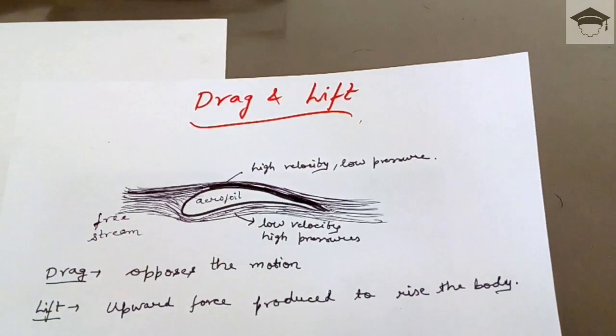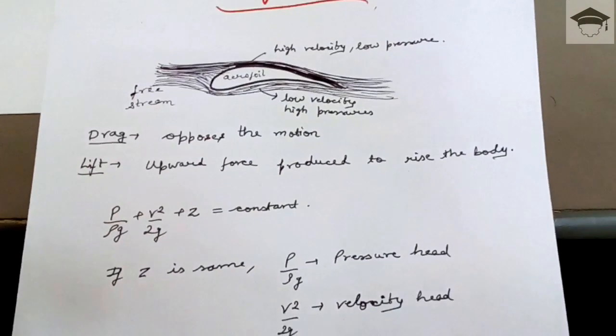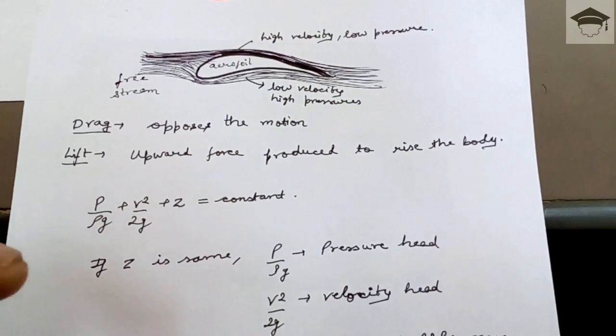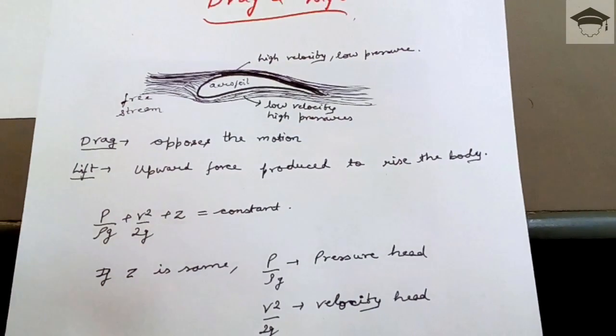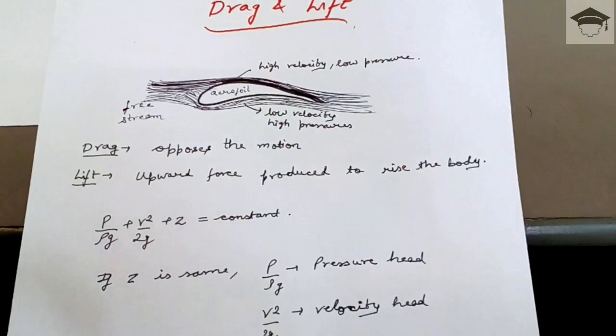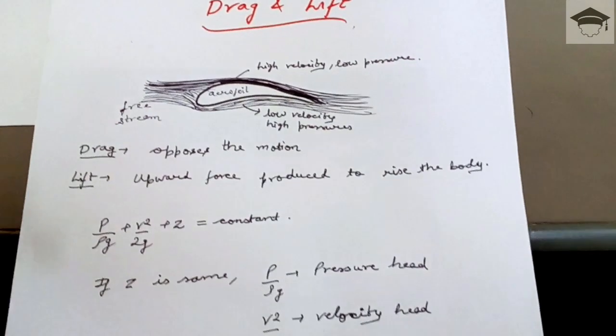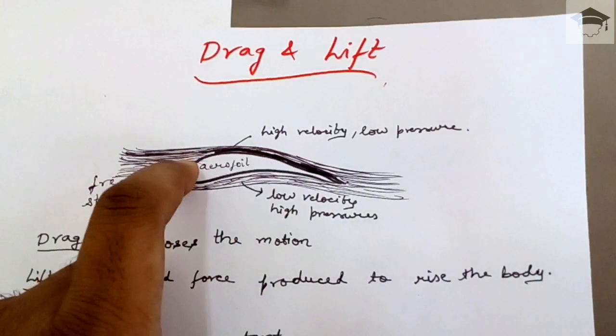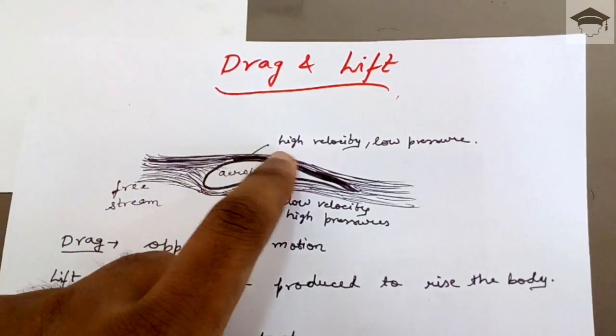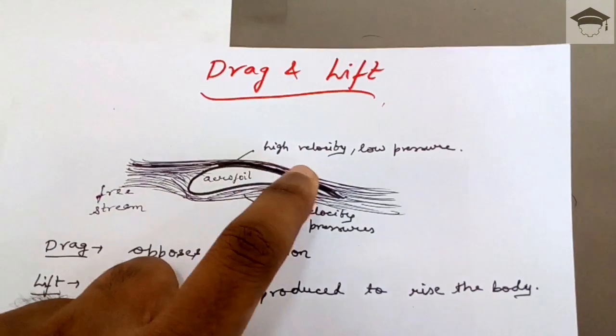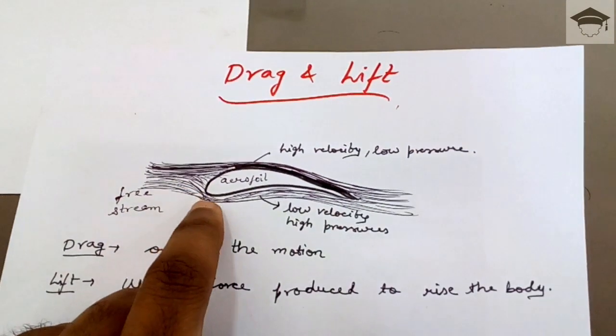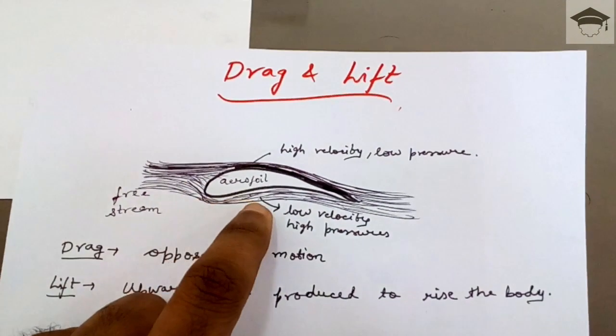And if velocity head decreases, pressure head rises. Similarly, here because there is no more obstruction, velocity is high and hence the pressure will be low. And here the obstruction is very large, so velocity will be low and pressure will be high.